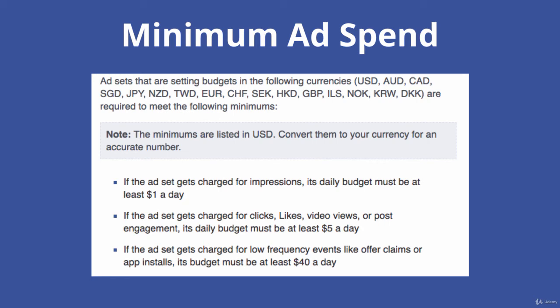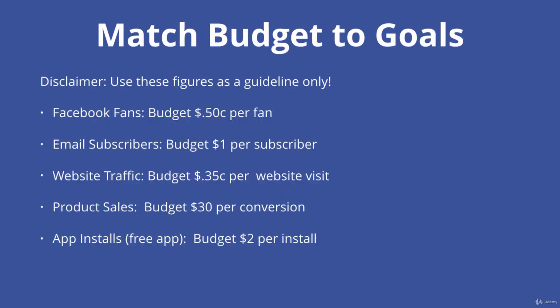Now let's look at it from another perspective — matching your budget to your goals. These are just guidelines; results will vary, but they're numbers to work towards. For Facebook fans, budget about 50 cents per fan. Email subscribers, about $1 per subscriber. Website traffic, about 35 cents per visit. Product sales, budget about $30 per conversion. App installs for a free app, budget about $2 per install. So those are some very rough guidelines to work towards.